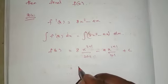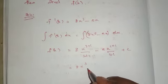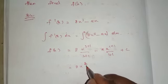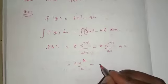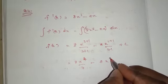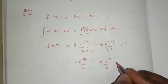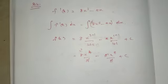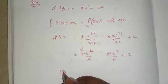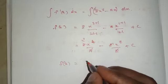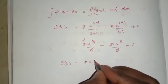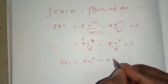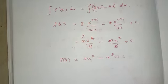Next, simplify: 8 x power 4 by 4 minus 2 into x square by 2 plus c. 8 divided by 4 is 2, 2 divided by 2 is 1. Therefore, f of x equals 2x power 4 minus x square plus c.